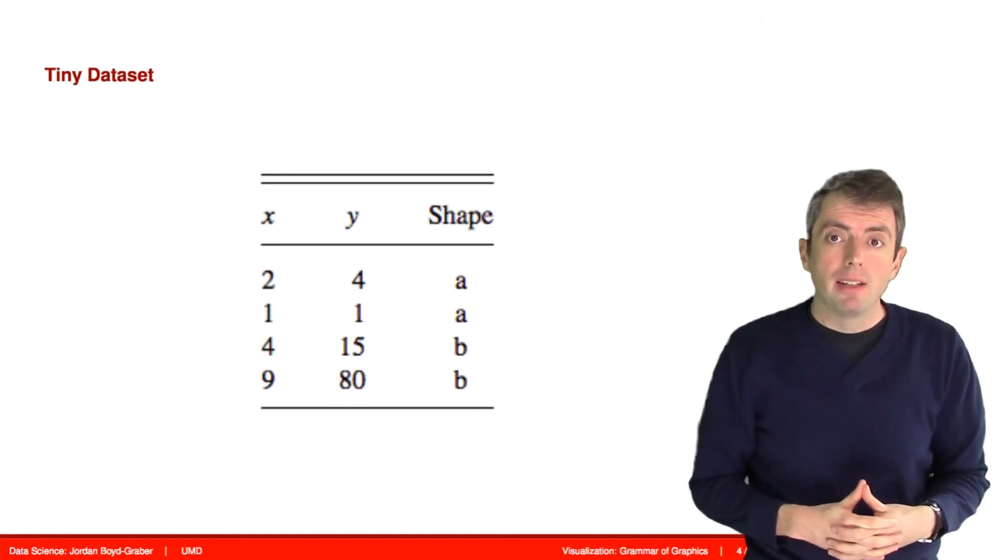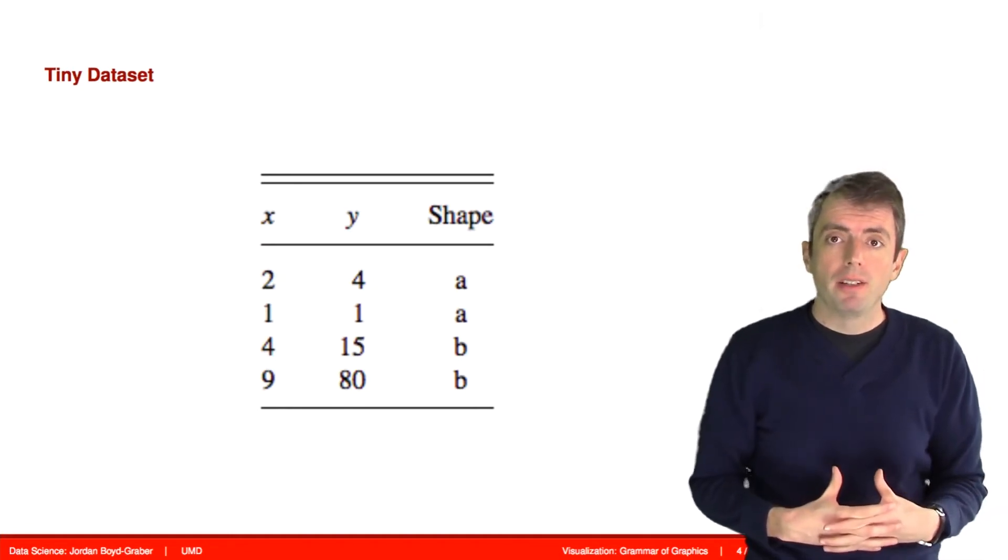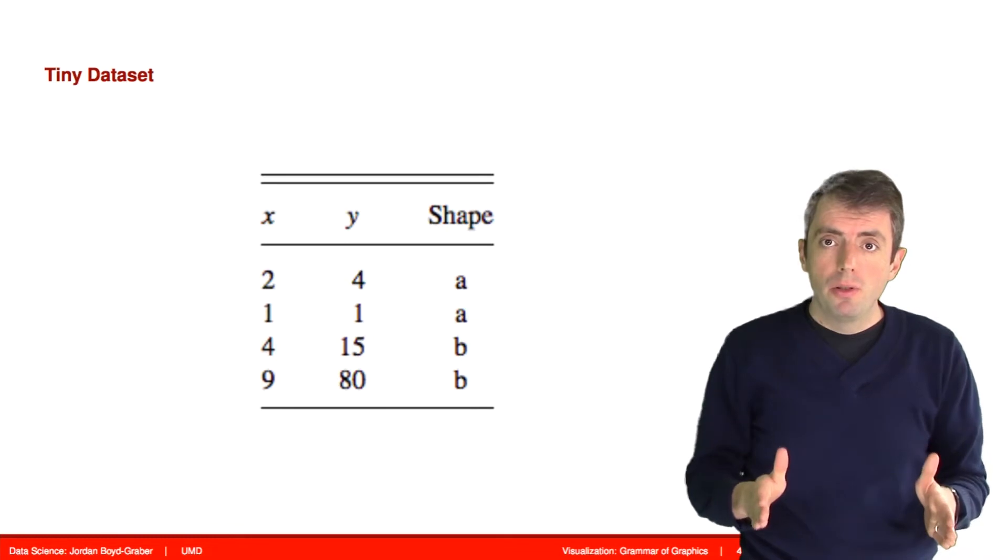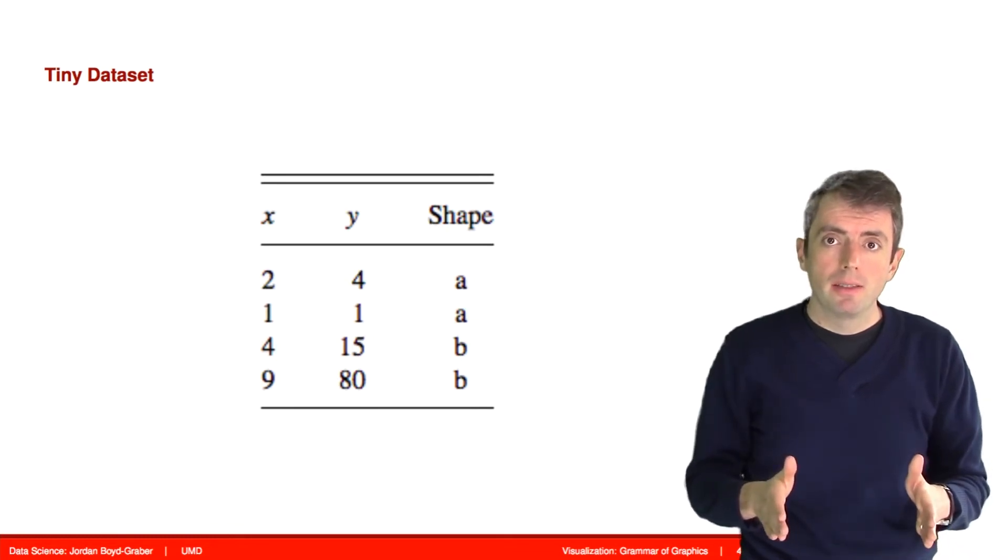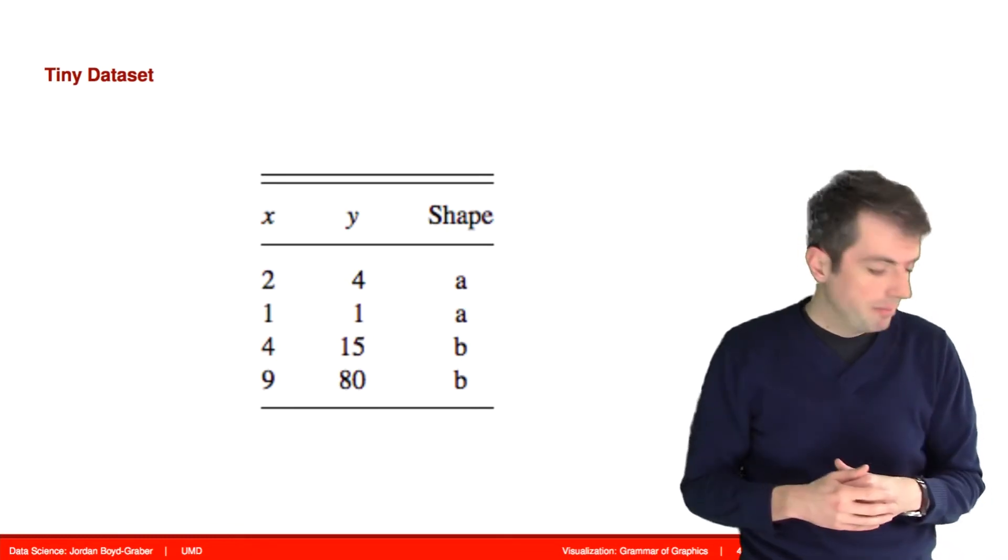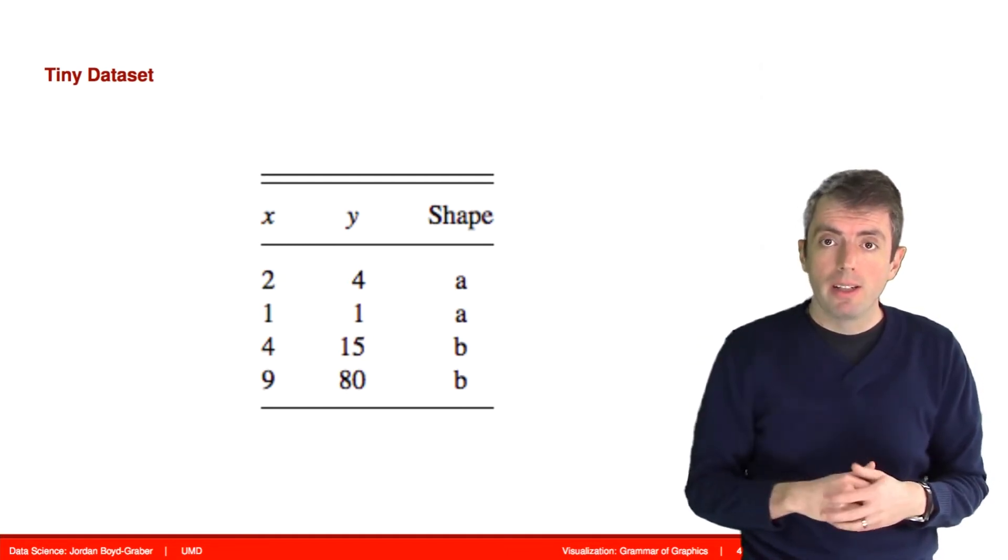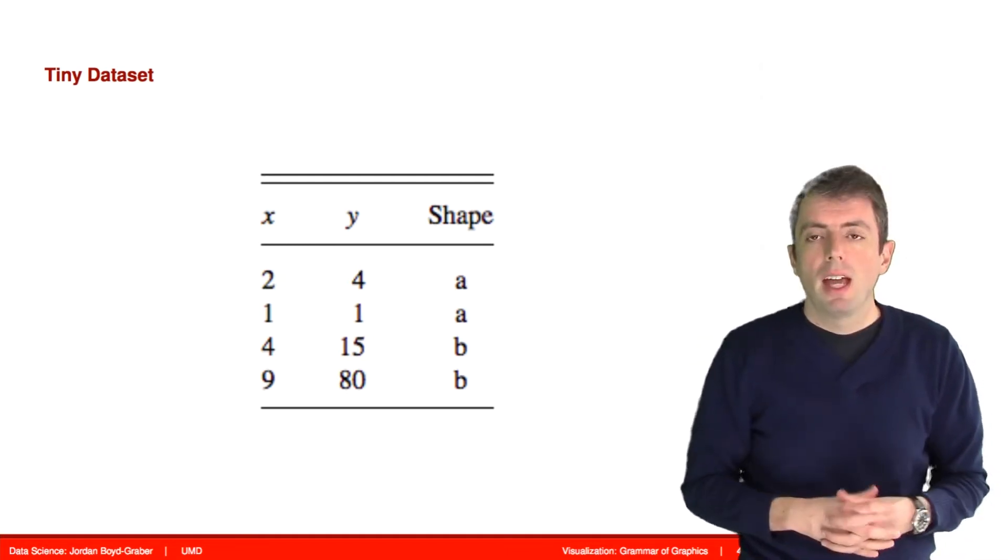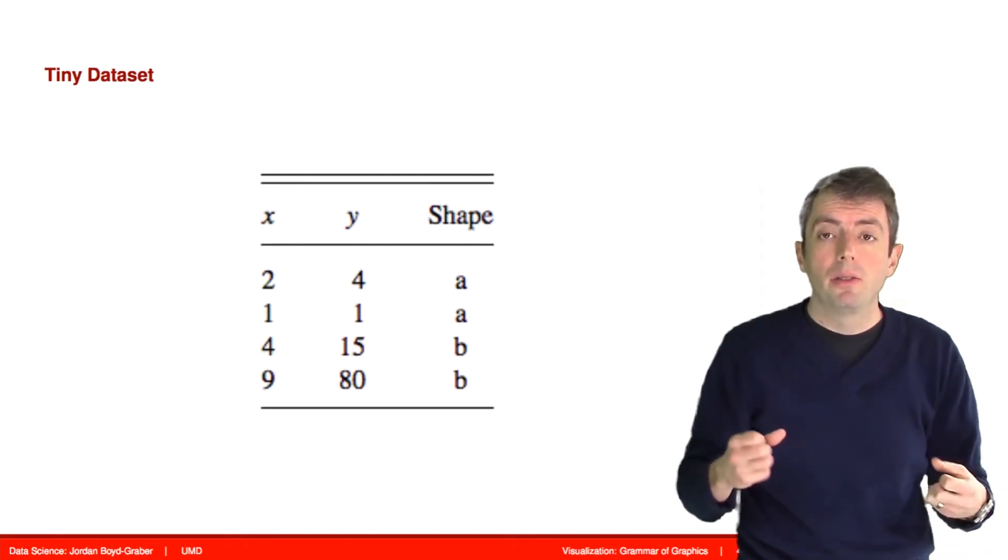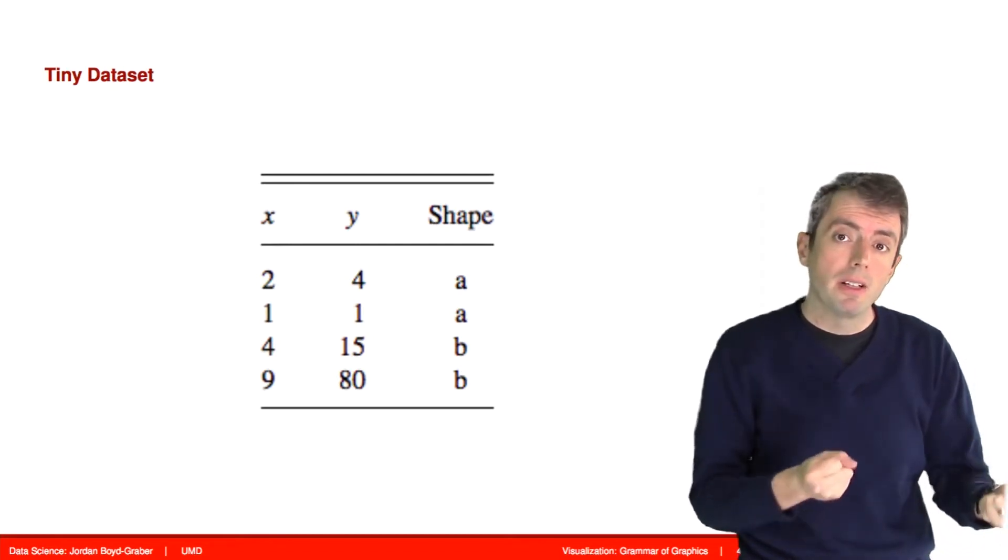Let's start with a really simple dataset. We have four observations, two continuous coordinates that we'll call x and y, and one discrete coordinate that we'll call the shape.